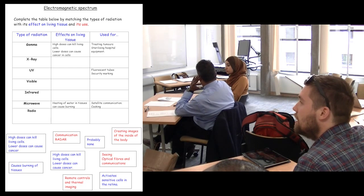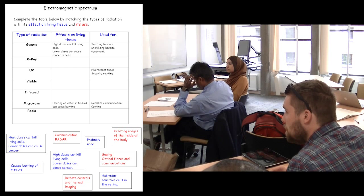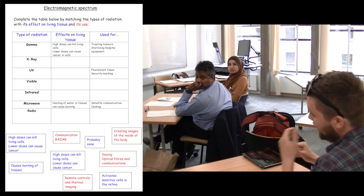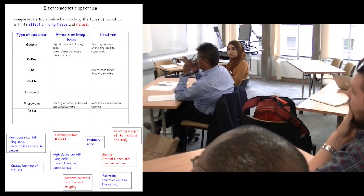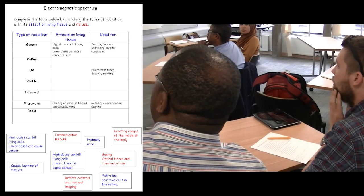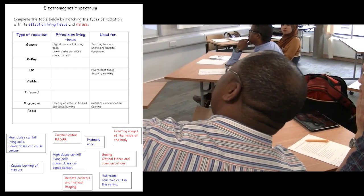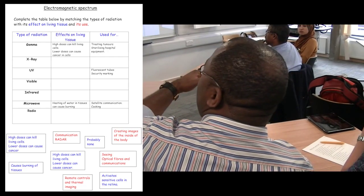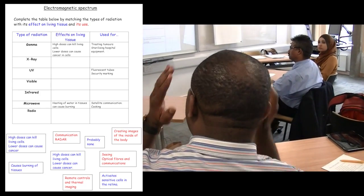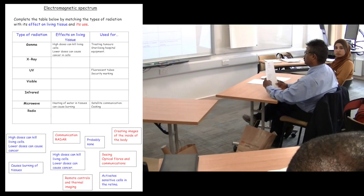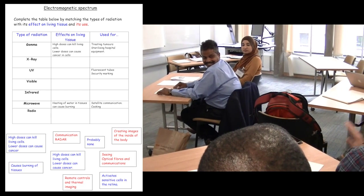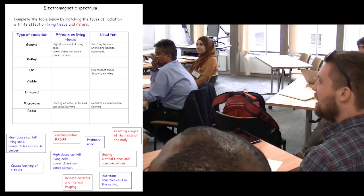Another suggestion was to reorder the worksheet — for example, it started with gamma rays but most textbooks and teachers start with radio waves and move up, showing increasing energy and decreasing wavelength. You want to start with low energy and move up to high energy. There was a note that exam questions have put them the other way round, but you'd rather students understand the pattern than just learn it left to right without understanding.